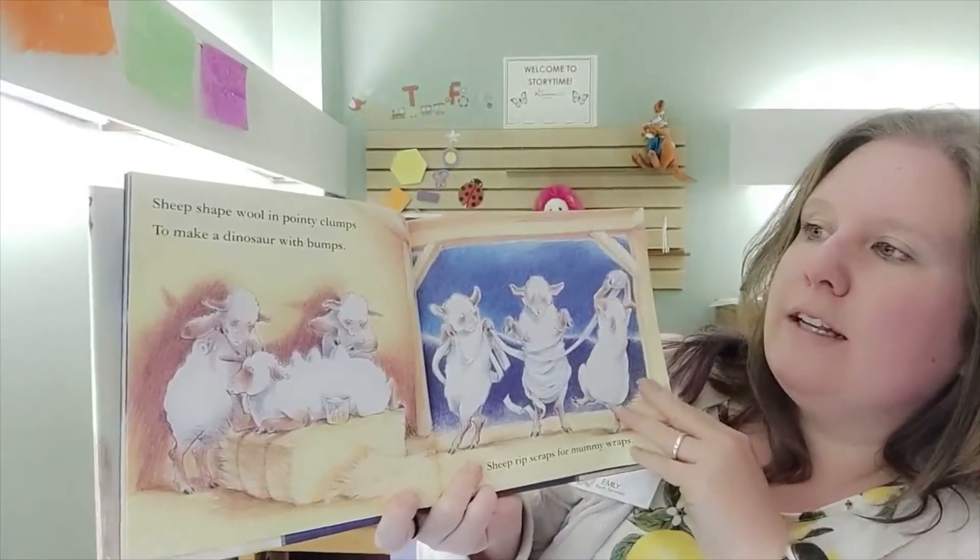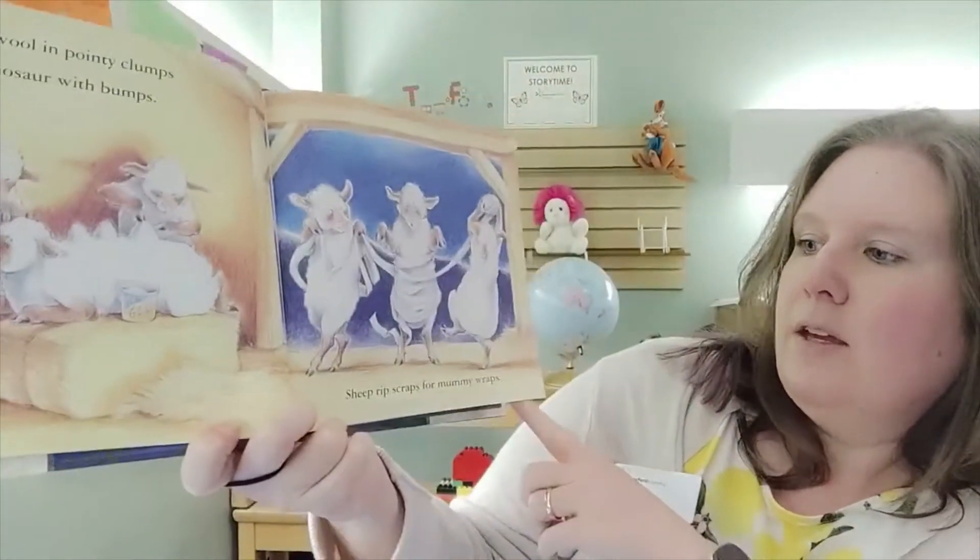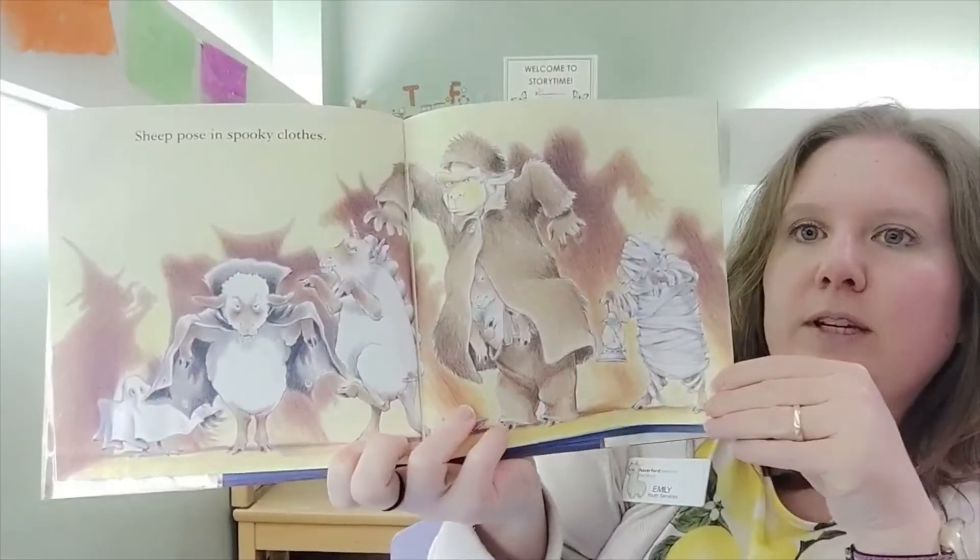Sheep shape wool in pointy clumps to make a dinosaur with bumps. Sheep rip scraps for mummy wraps. Sheep pose in spooky clothes.